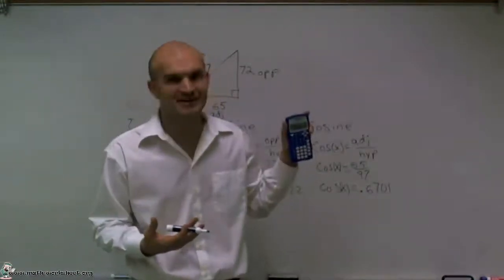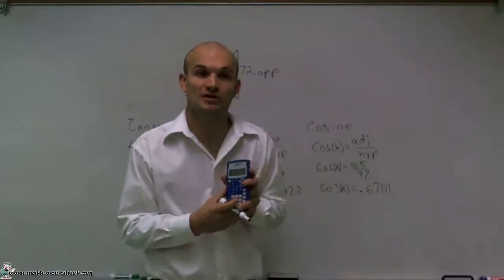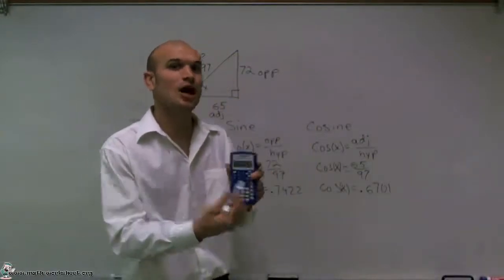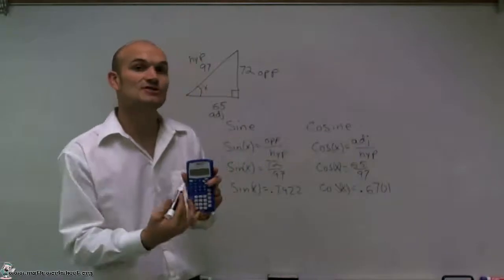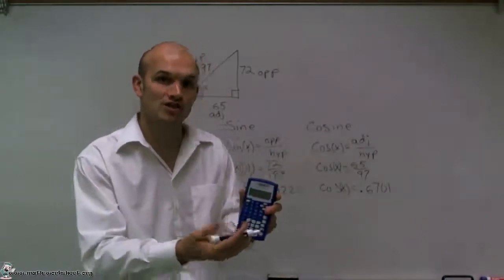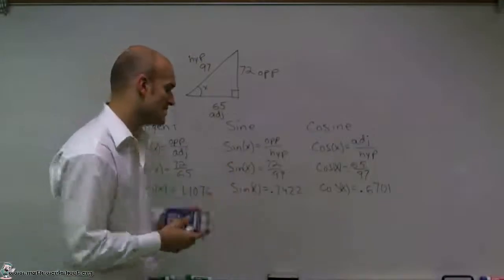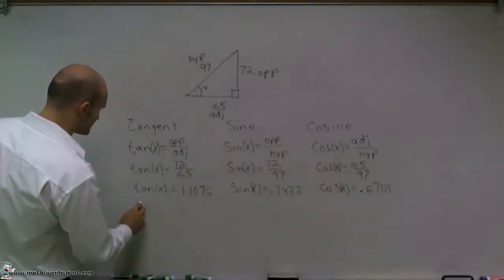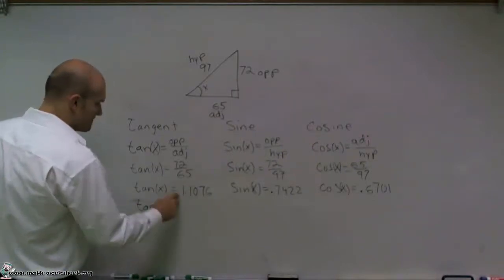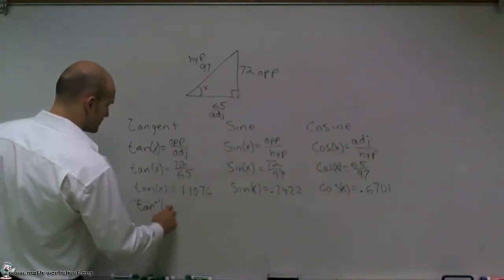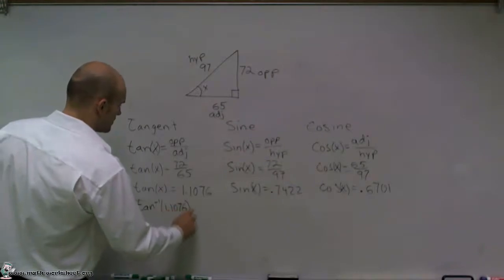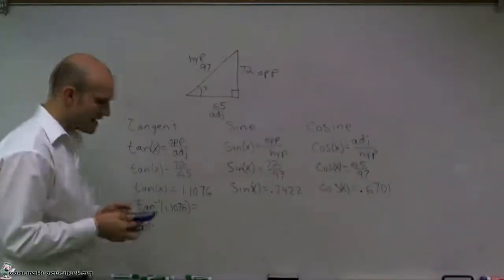How do we undo those functions? Well, thankfully on our calculator, it's the inverse function. The inverse tan undoes tan. The inverse cosine is the inverse function of cosine, and the inverse sine is the inverse function for sine. If I take the inverse tan of my value, I'm going to get my angle.